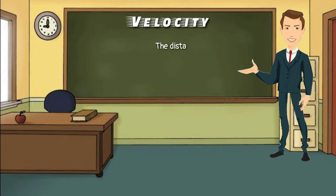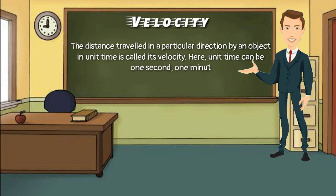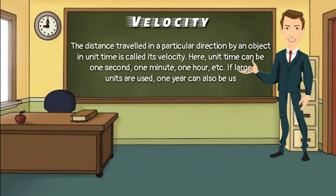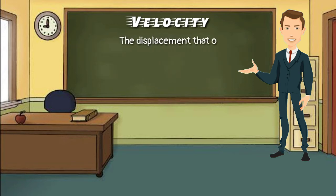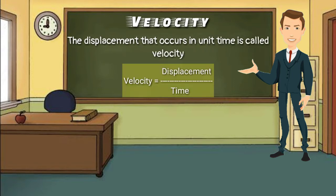Second: Velocity. The distance traveled in one direction by an object in a unit time is called velocity. Another definition: the displacement that occurs in unit time is called velocity. The formula is: velocity equals displacement divided by time. For velocity, both magnitude and direction are important. Therefore, velocity is a vector quantity.